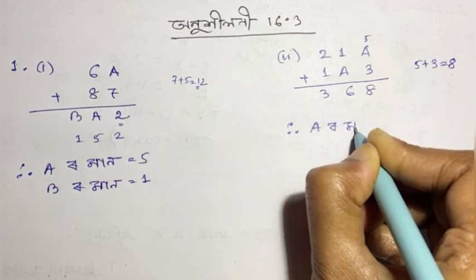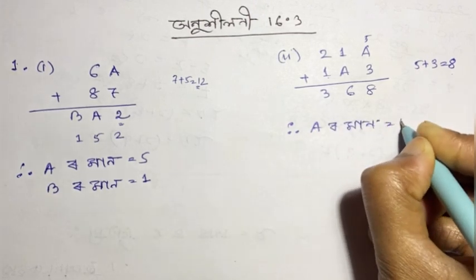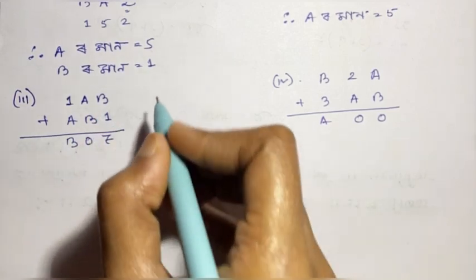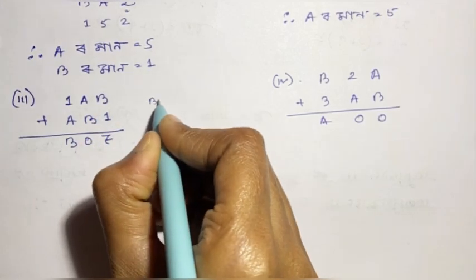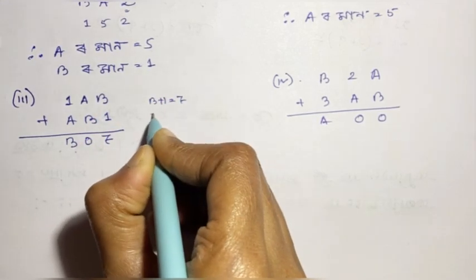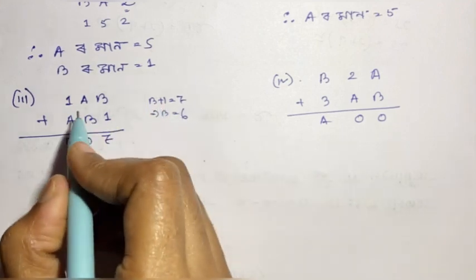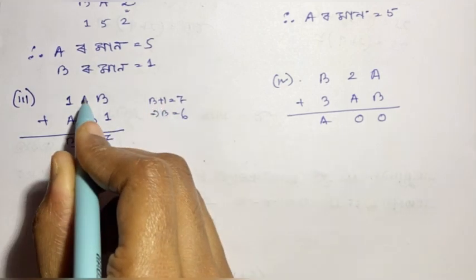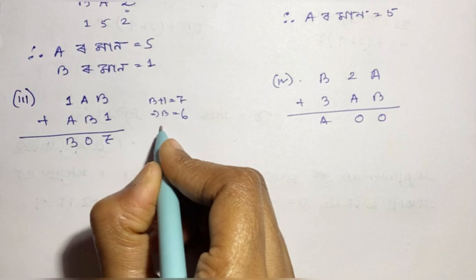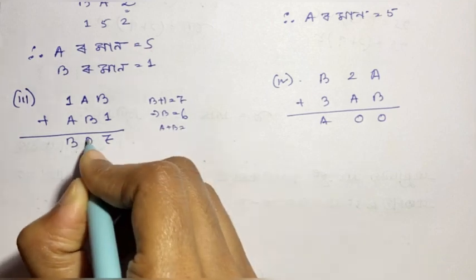A means equals 5. Then b plus 1 equals 7. That means how many times are you? 6. So here you will have to answer: a plus b equals 0.